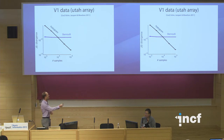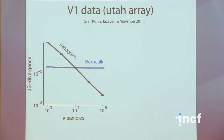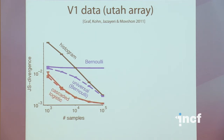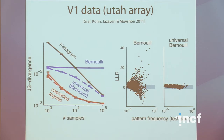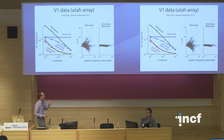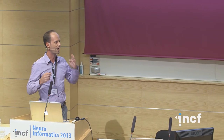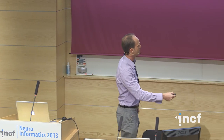Here's the same kind of plot for actual data collected by Arnold Graf and Tony Modson's lab — recordings from 10 V1 neurons in a Utah array setup. The histogram model is bad for small amounts of data but good for large amounts. The Bernoulli model starts out better but saturates and doesn't converge. If we make a universal model using a Dirichlet process with a cascaded logistic base measure, we do much better. The log likelihood ratio of patterns seen in actual data versus how well they were predicted shows that the universal model is correctly predicting patterns: on average there's no discrepancy between predicted and observed frequencies in test data.